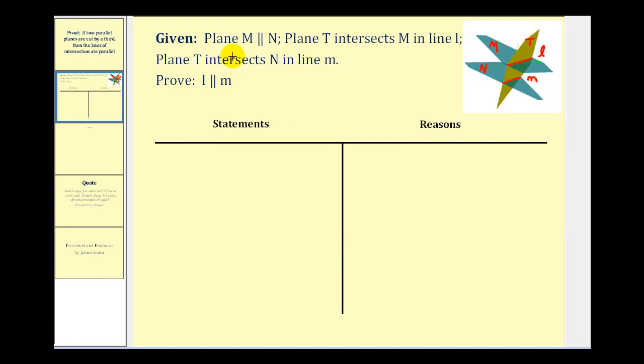So what we have here is two parallel planes, M and N, and plane T cuts both M and N. The intersection of T and M is line L, and the intersection of T and N is line M.